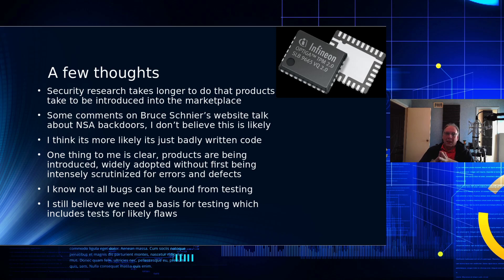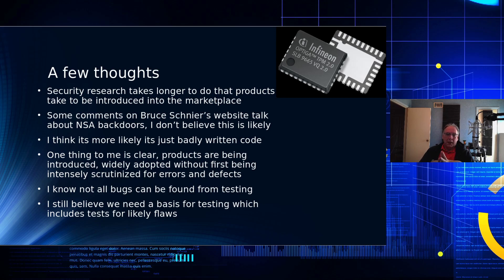Some comments on Bruce Schneier's website talked about this being an impossible NSA backdoor. I doubt it. It would be more likely that this is just bad code, because first of all, it's not pervasive — it's only two specific areas of the TPM variations: one chip and then the Intel firmware-based TPM. If the NSA wanted to open a backdoor, they would open a backdoor throughout every TPM chip. So I think it's just bad code.